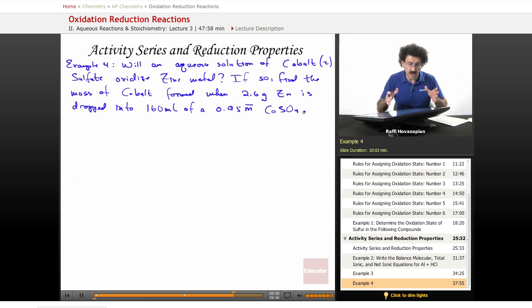So, will an aqueous solution of cobalt sulfate oxidize zinc metal? If so, find the mass of cobalt formed when 2.6 grams of zinc is dropped into 160 milliliters of a 0.95 molar cobalt sulfate.